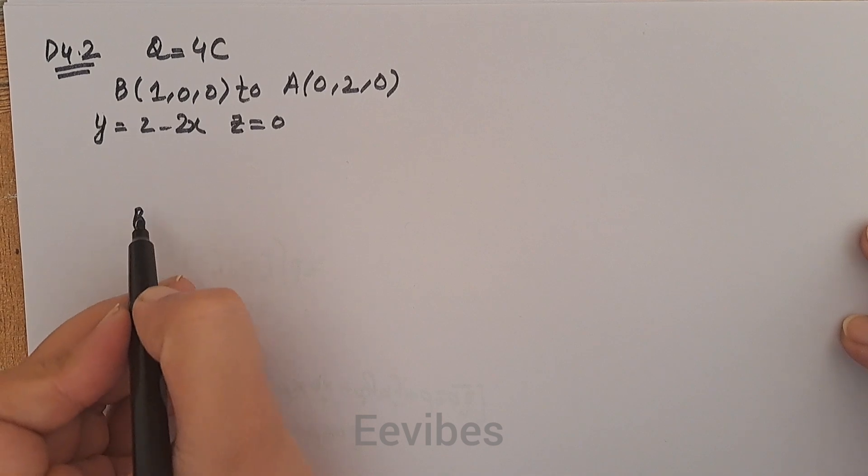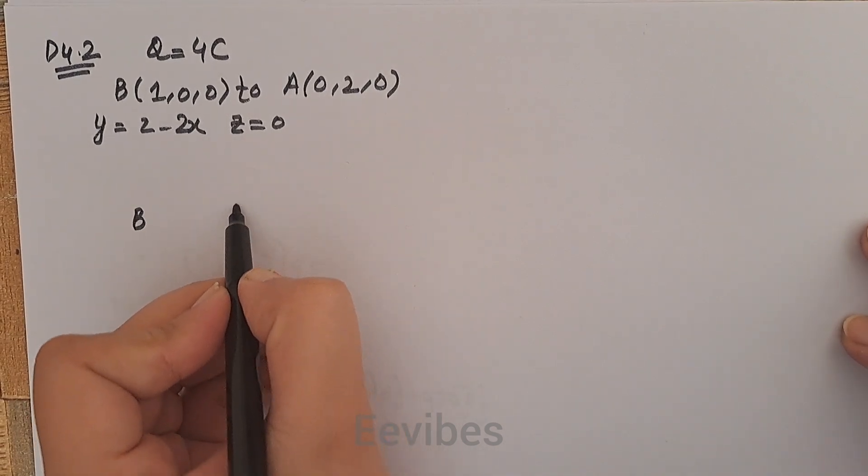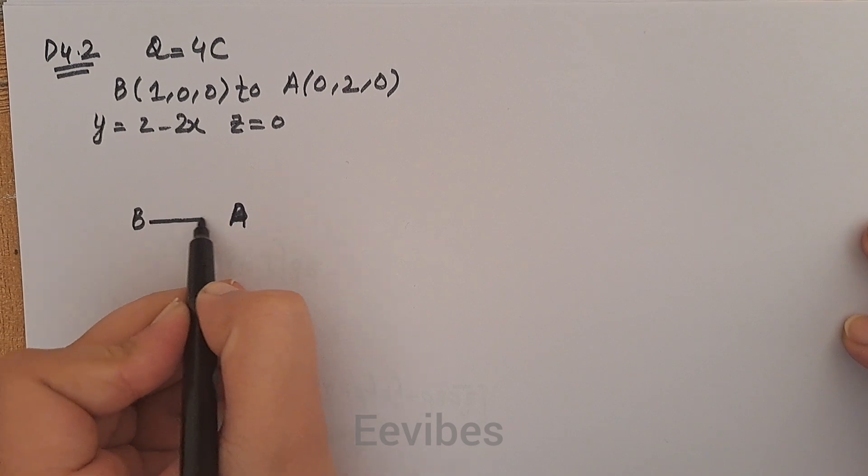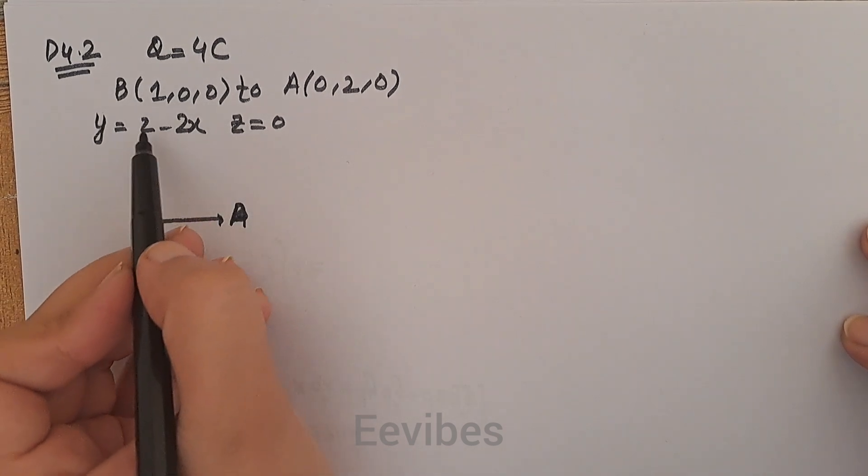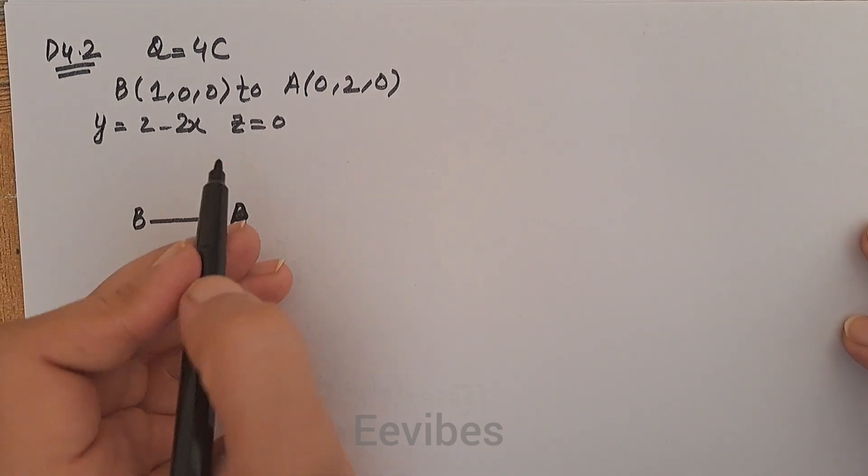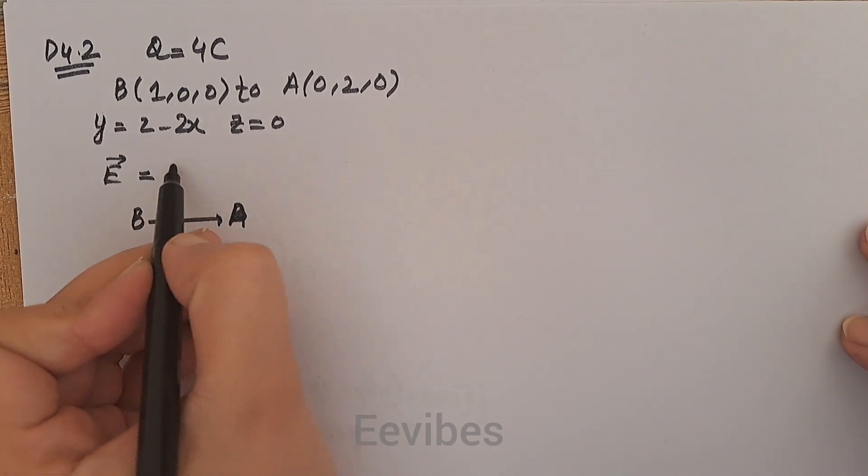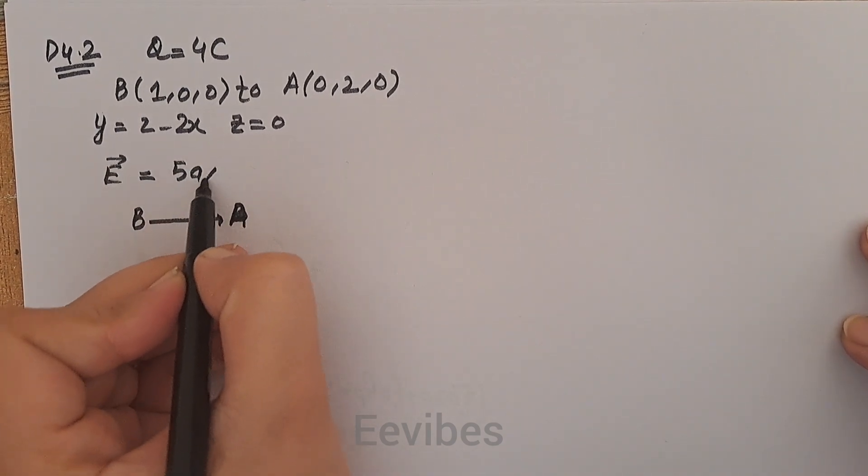in the z = 0 plane. Basically, you have moved a point charge from point B to point A in the xy plane along a straight line whose equation is defined by y = 2 - 2x in the presence of the electric field E which is defined by 5ax̂.